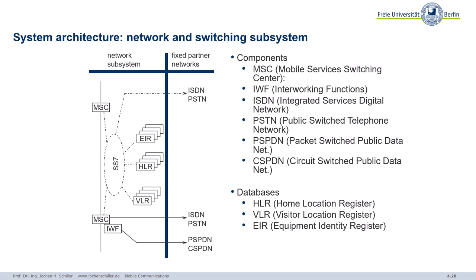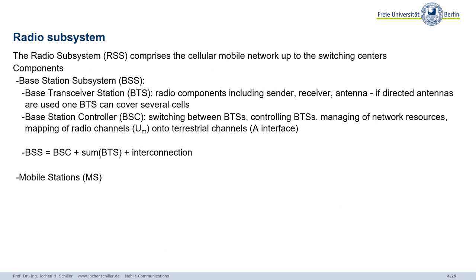Now, many architectures, figures, acronyms — let's go back to the radio subsystem and start from the beginning, explaining the components. The radio subsystem is really the heart for the wireless transmission. It comprises all that you can see in the cellular network: the antennas, the Base Transceiver Stations — not only antennas but senders and receivers. You can cover several cells with directed antennas using sectorized cells, as I explained already.